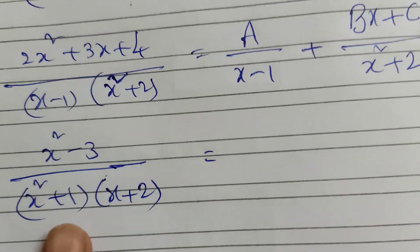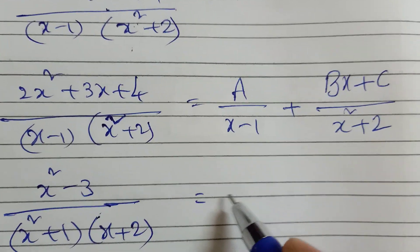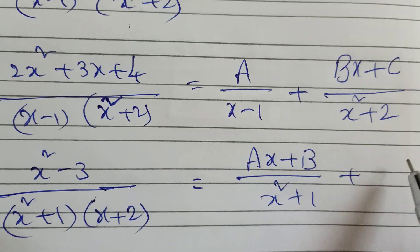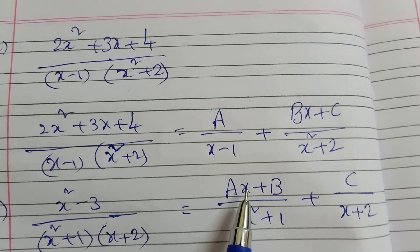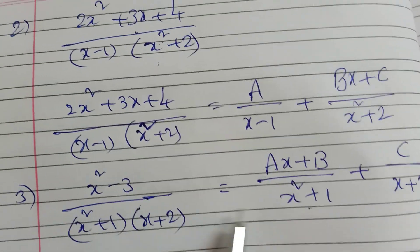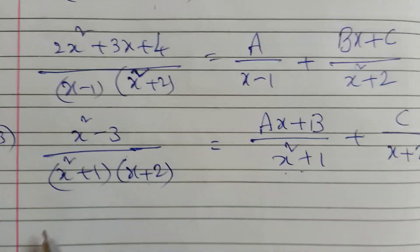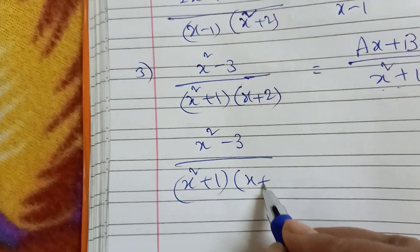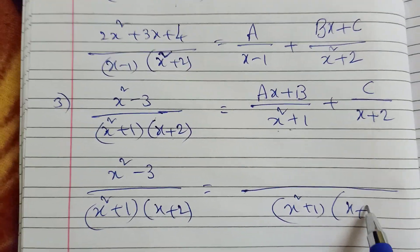The problem is: (x squared minus 3) divided by (x squared plus 1) into (x plus 2), equal to (ax plus b) by (x squared plus 1), plus c by (x plus 2).